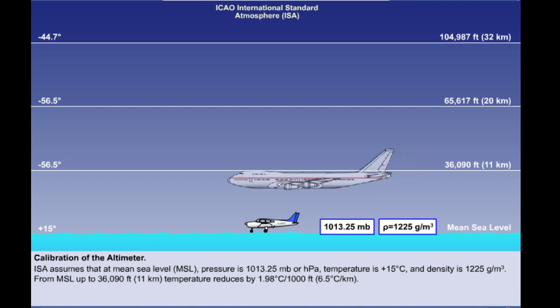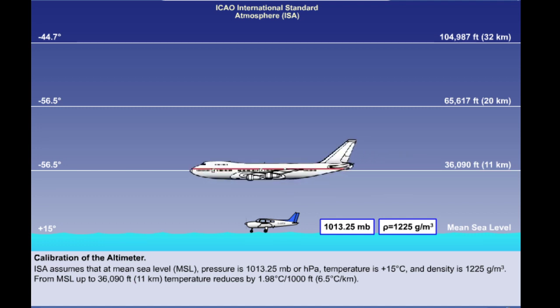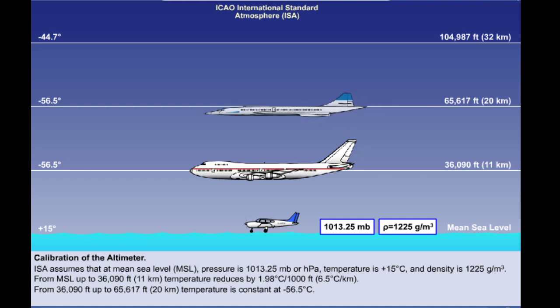Secondly, that from mean sea level up to 36,090 feet or 11 kilometres, temperature is assumed to reduce by 1.98 degrees Celsius per thousand feet or 6.5 degrees Celsius per kilometre. Thirdly, that from 36,090 feet or 11 kilometres up to 65,617 feet or 20 kilometres, the temperature is constant at minus 56.5 degrees Celsius.